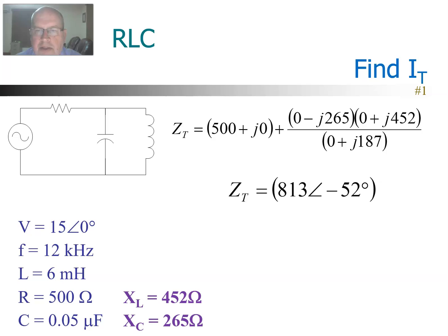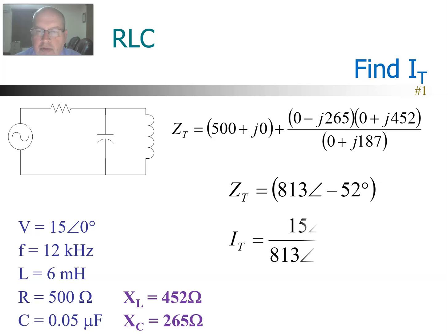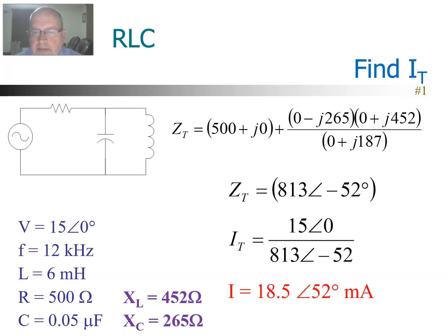I normally have my calculator set to polar notation. You may get an answer in rectangular — you can use either notation for the rest of the problem. Your calculator will accept either polar or rectangular. So I'm going to keep that in polar, and then I'm going to use Ohm's Law in order to find the current. Voltage is 15 ∠0. Dividing by the Z we just found, the current works out to be 18.5 milliamps at an angle of 52 degrees. That's the total current in the circuit, and that's what we're looking for.